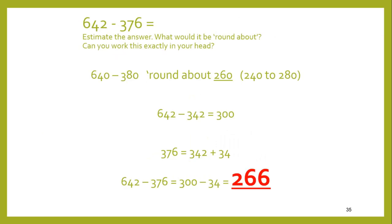Estimate the next answer — it's about 640 take away 380, so the answer's around about 260, perhaps anywhere in the range 240 to 280. If the answer we get is less than 240 or greater than 280, then we worry. We could take 342 away for a start — that gives us an even 300 — but we need to take away 376, which is another 34 extra. So we take 34 away from 300, which leaves 266. Not the only way of doing this, but one possible way students could think through the problem.